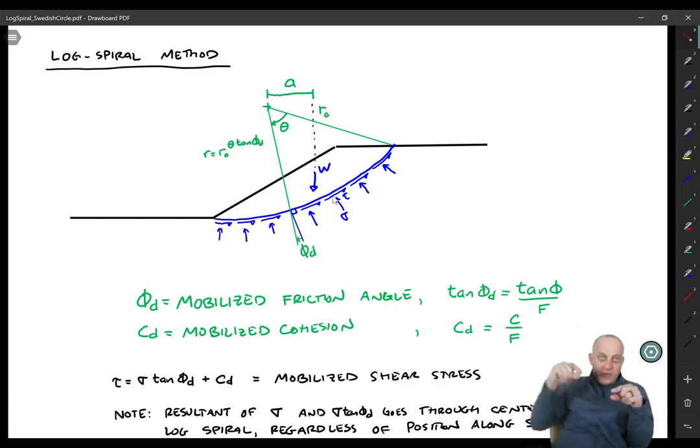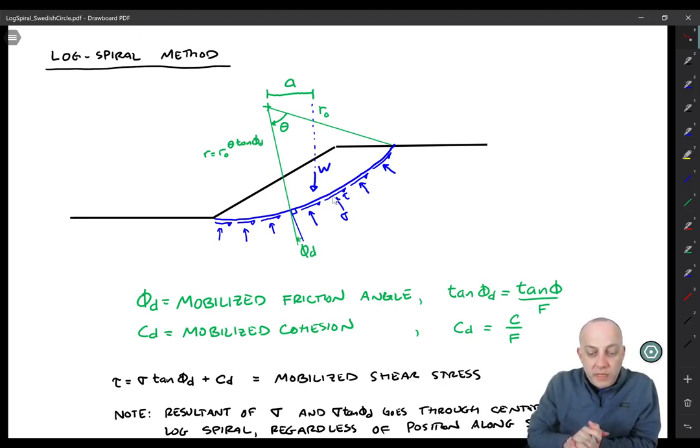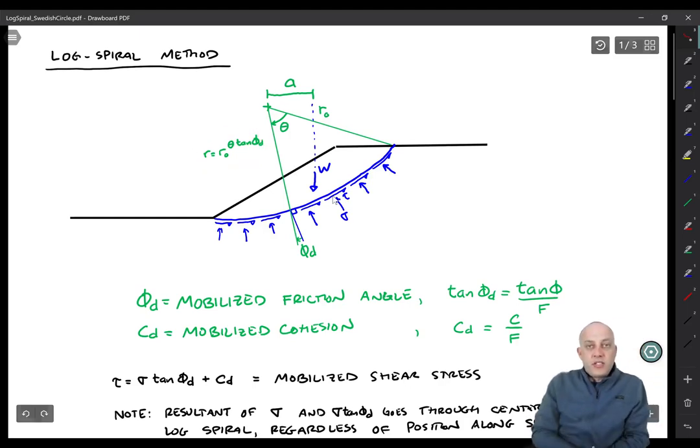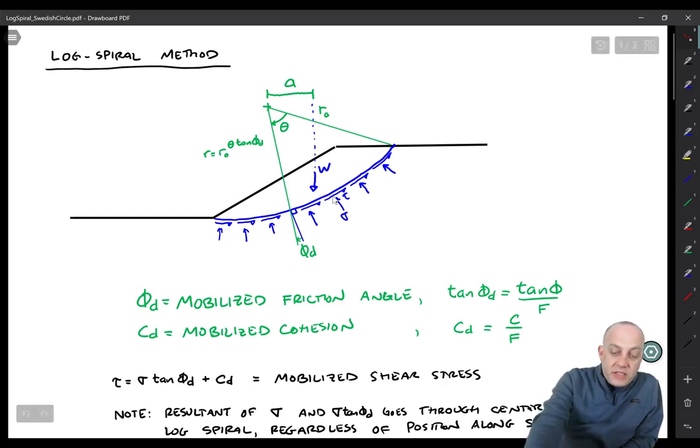If you were to keep spinning it around you would get a spiral that just keeps getting bigger and bigger like the shell of a snail and it's given by this equation. R is equal to R0 e to the theta times tangent of phi sub d, and in this case phi sub d is the mobilized friction angle.